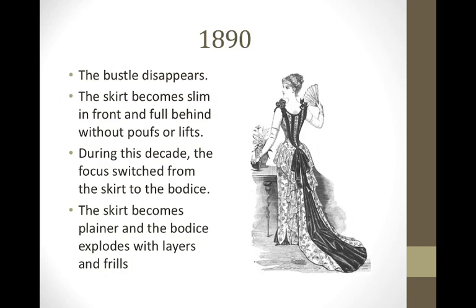Around 1890, the bustle started to disappear. They were still using corsets and still had lots of layers on their clothing, but the skirt became very slim in the front and full behind without those poofs or lifts. During this decade, the focus switched from the skirt to the bodice. The bodice now had a lot of ruffles and beadwork on it, the skirt became a lot plainer, and the bodice had lots of layers and frills.